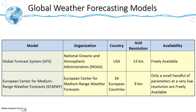The two most widely used global weather forecasting models are the Global Forecast System, operated by the National Oceanic and Atmospheric Administration, a US government funded organization. This model has a grid resolution of 13 km and its data is freely available. The other model is the European Centre for Medium-Range Weather Forecasts, ECMWF, operated by an organization of the same name. It is funded by 34 European countries and has a higher resolution of 9 km.